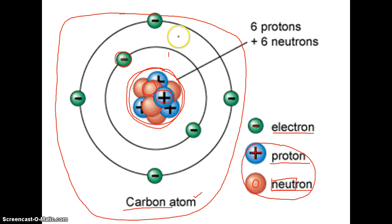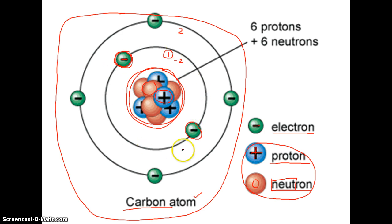This first circle here represents orbital number one, and then there's a second circle wider than it representing orbital number two. There are certain rules that electrons abide by when filling these orbitals. The first orbital is maxed out when it has two electrons in it — we can see one electron here and one here in this first orbital, so it's full. The second orbital likes to have a total of eight electrons in it.